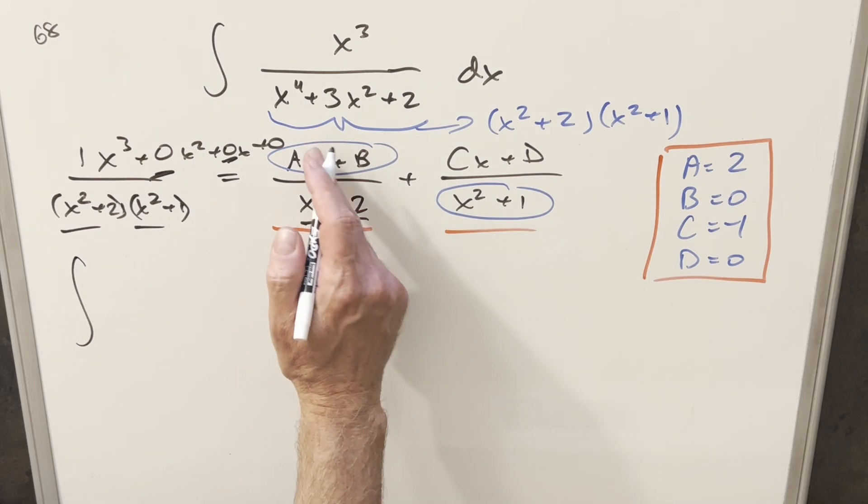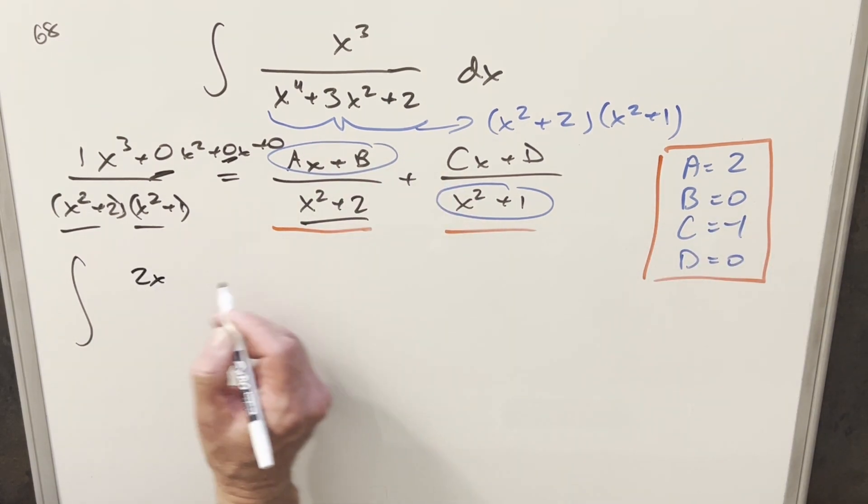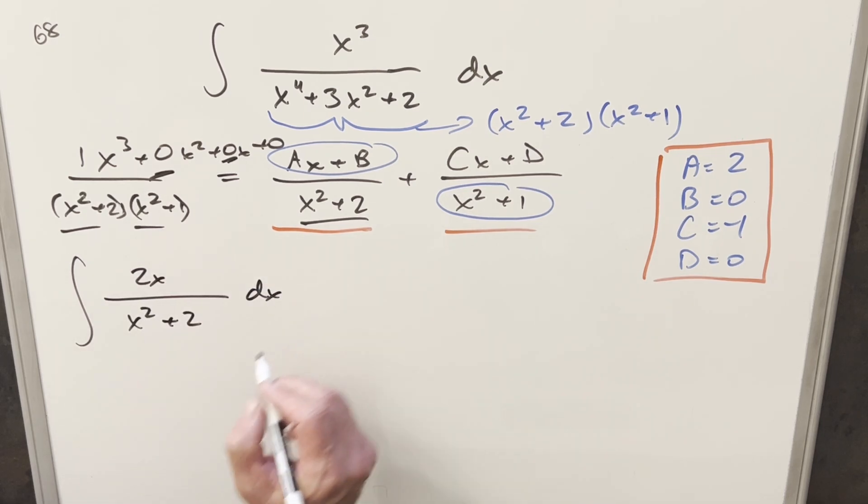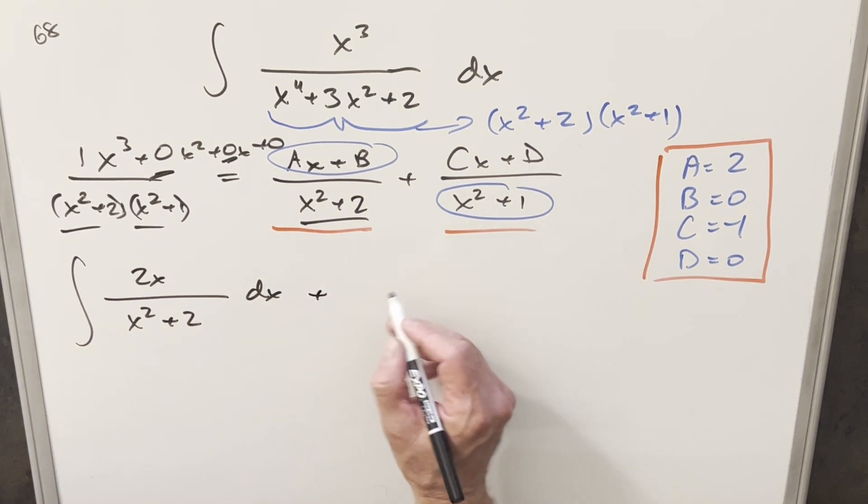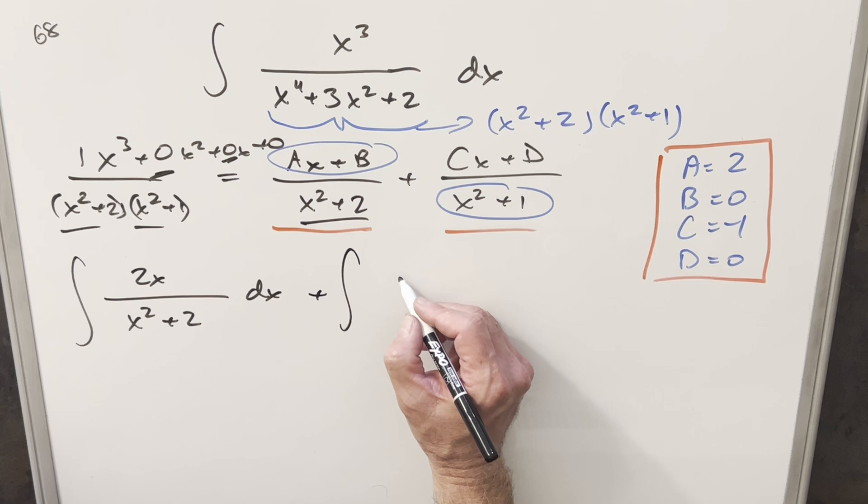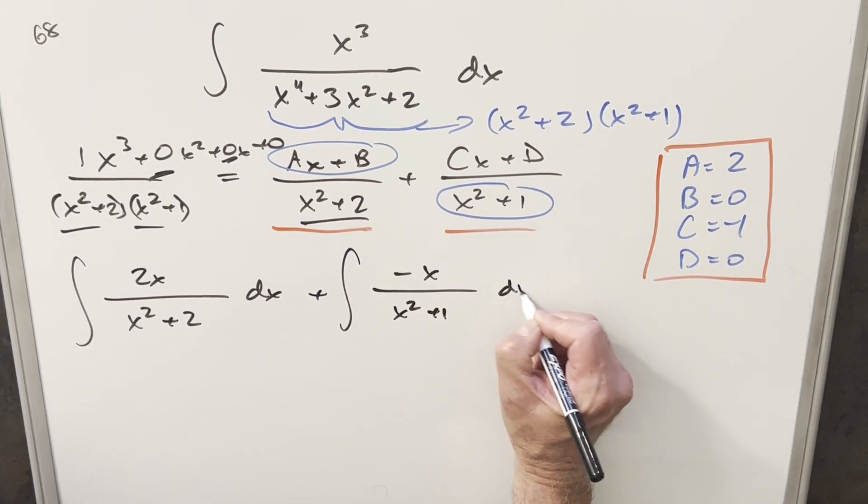So for the first one, we know our a and b value now. So the a value is going to be 2 and the b value is 0. So we're just going to leave that off and end up with 2x over x squared plus 2 for this first integral. And then for the second one, we know our c value is minus 1 and d is 0. So this is going to just become minus x over x squared plus 1 dx here.